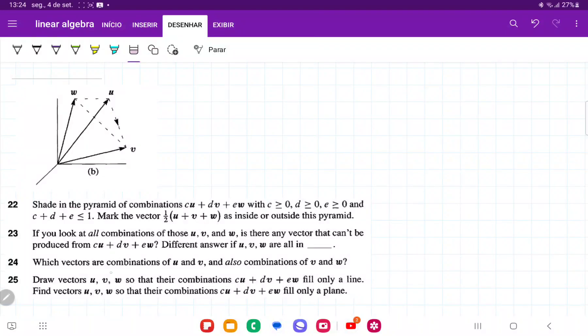So for number 24, it's asking us which vectors are combinations of u and v, and also combinations of v and w. So let's draw the combinations of u, v.